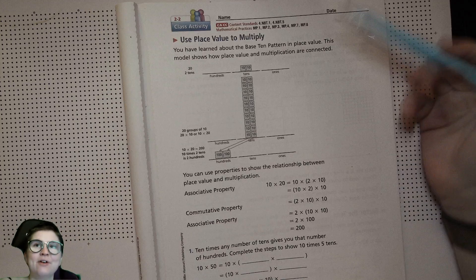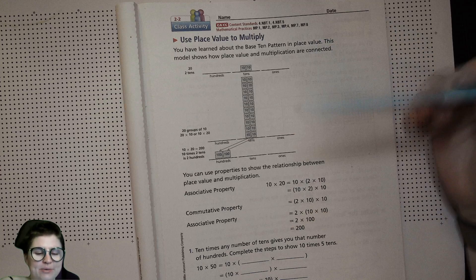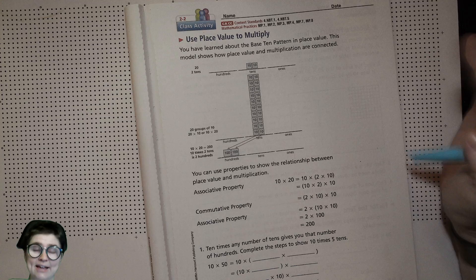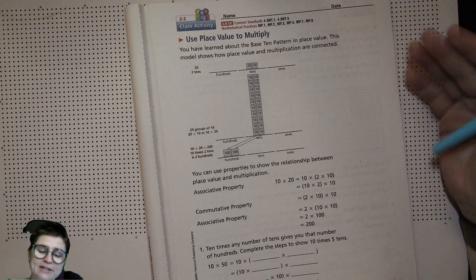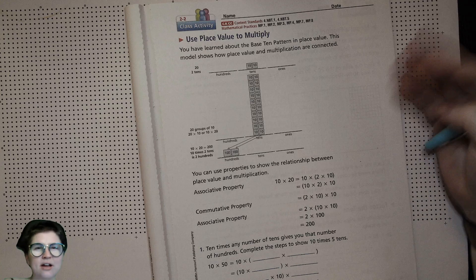Yesterday, or in the last video, we talked about different ways to represent multiplication through an area model. Today we're going to continue with that idea. We are using our knowledge of base 10, which is how our numbers are organized, to help us understand multiplying things by 10, 100, 1000.